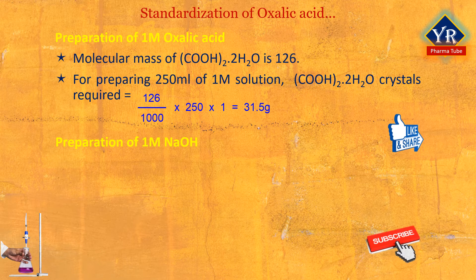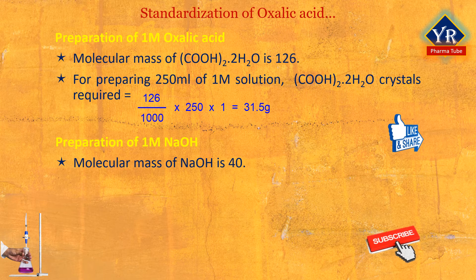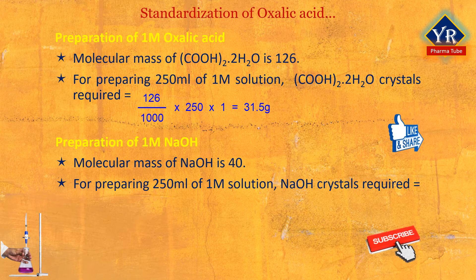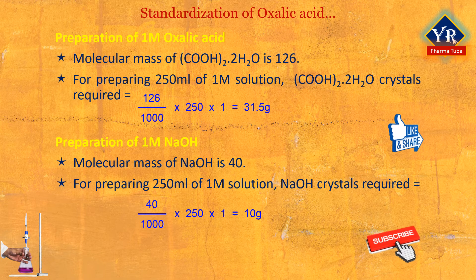The second solution is 1 molar sodium hydroxide solution. The molecular mass of sodium hydroxide is 40. Hence, for preparing 1000 ml of 1 molar sodium hydroxide, weight of NaOH crystals required are 40 grams. Therefore, for preparing 250 ml of 1 molar solution, that is 40 divided by 1000 ml multiplied by 250 ml multiplied by the concentration 1, is equal to 10 grams.